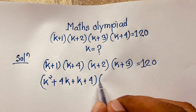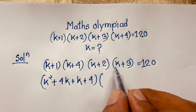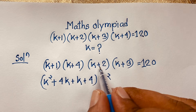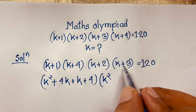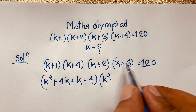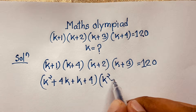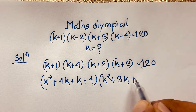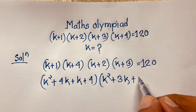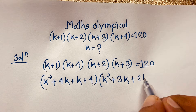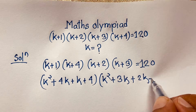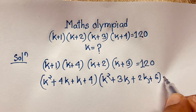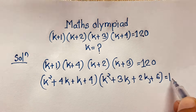Now for the other side: (k+2)(k+3). k times k is k², k times 3 is 3k, 2 times k is 2k, and 2 times 3 is 6. So (k+2)(k+3) = k² + 5k + 6. This equals 120.